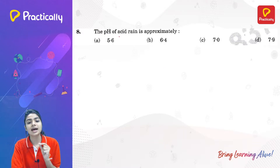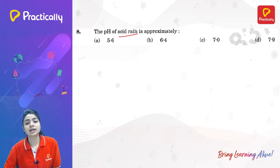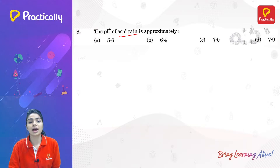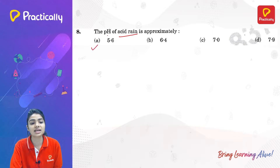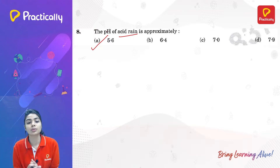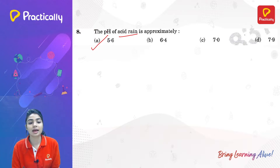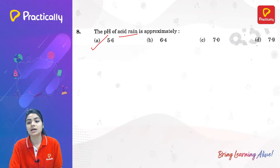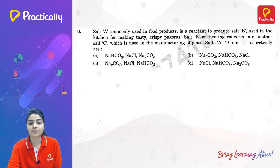The pH of acid rain is approximately 5.6. Acid rain is acidic because it contains nitrogen dioxide and sulfur dioxide. It is very acidic and can harm marble as well as human beings. So the correct answer is option A — pH approximately 5.6.